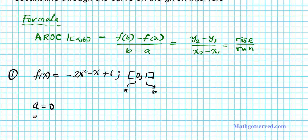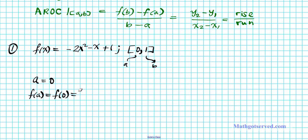Next thing we need to find is f(a). f(0) simply means we have to evaluate this function at x equals 0. So we have -2(0)² - 0 + 1. If you evaluate it, you end up with positive 1.